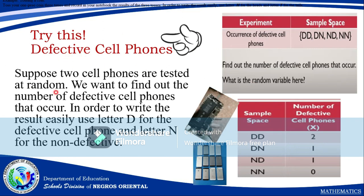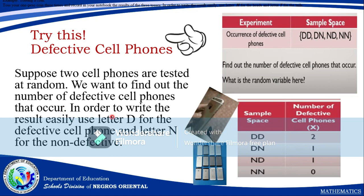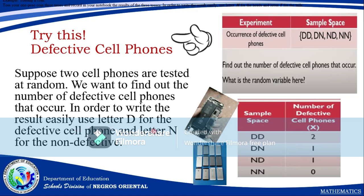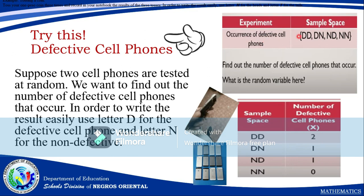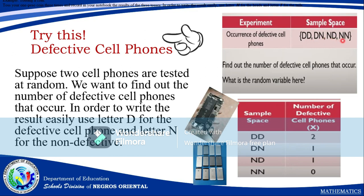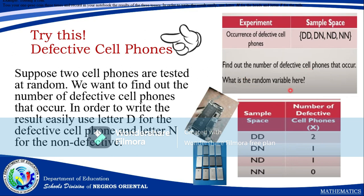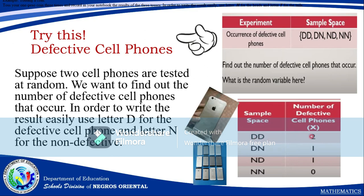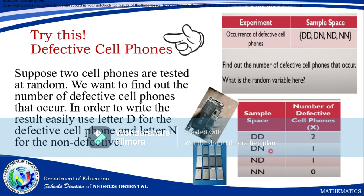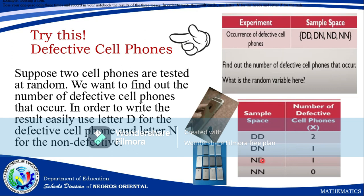Try this: suppose two cell phones are tested at random. You want to find out the number of defective cell phones. Use D for defective and N for non-defective. The sample space is: DD, DN, ND, NN. Looking at the number of defective phones: DD gives 2, DN gives 1, ND gives 1, and NN gives 0. So the random variable is {0, 1, 2}.